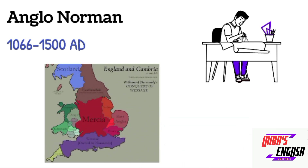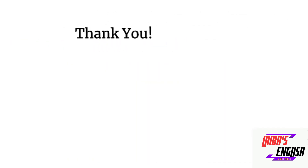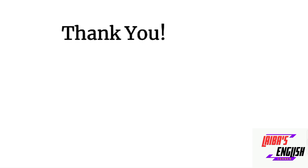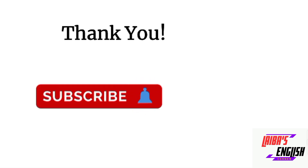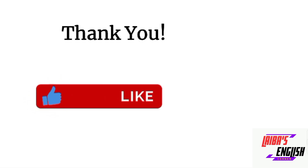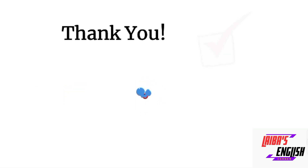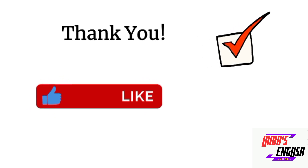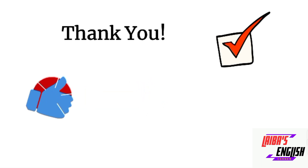This is basically the map of England around 1066 to 1500. This has been video number 2 on the history of the English language and literature. Previously, we discussed Old English or the Anglo-Saxon period; now we have covered Middle English or the Anglo-Norman period. We will cover all the ages in detail. If you like this video, please like, subscribe to the channel, and comment if you have any questions. Thank you so much for watching.